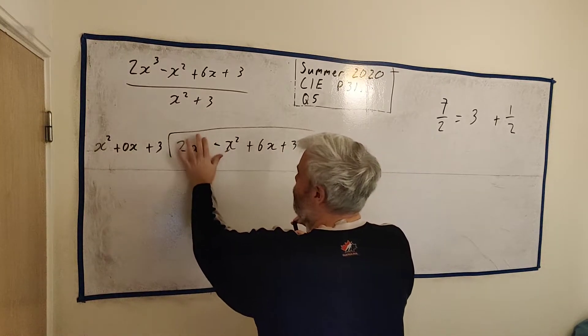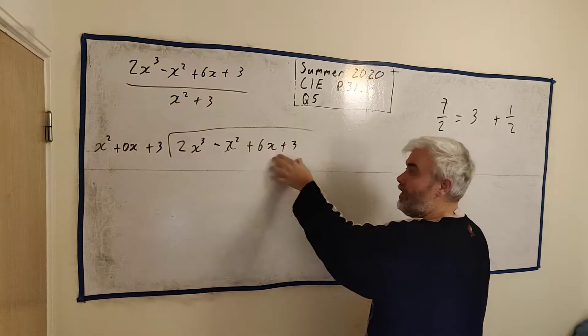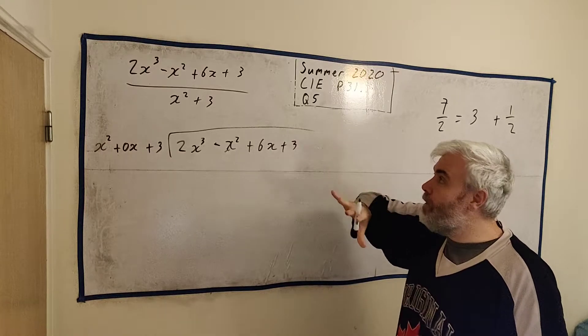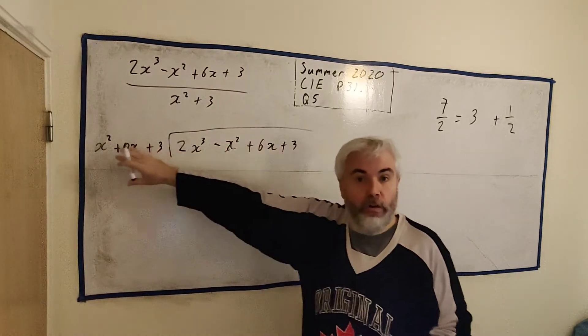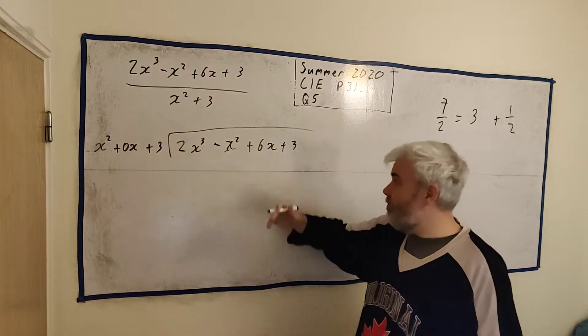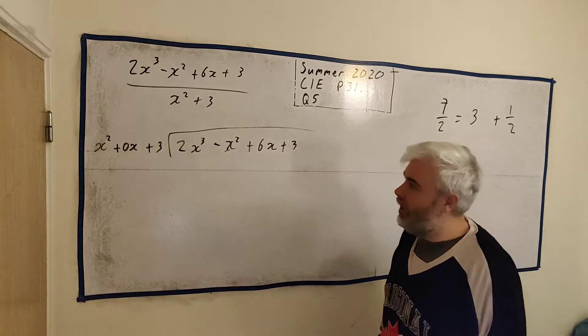That should be cubed. We want the x cubed part, the x squared part, the x part, and the non-x part. And it is helpful to have all of them. So if you're ever missing one of these in this part or this part, it's best to put in 0x in this case, or 0x squared or whatever you need to do.